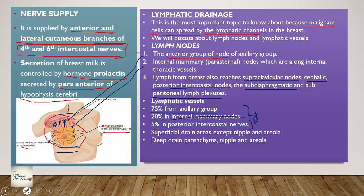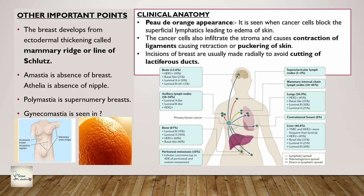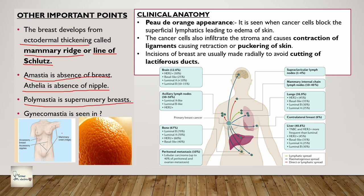The superficial drainage drains everything except the nipple and areola - that's very important. The deep drainage is into the parenchyma, nipple, and areola. An important point sometimes asked in viva is the line of Schlutz, also called the milk line or mammary ridge. During the development of a female child, the breast develops from the ectodermal thickening. Amastia is absence of breast, athelia is absence of nipple, polymastia is supernumerary breast, and gynecomastia - tell in comments where it is seen.